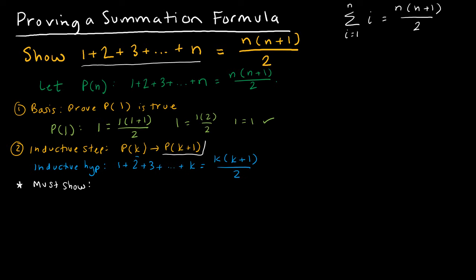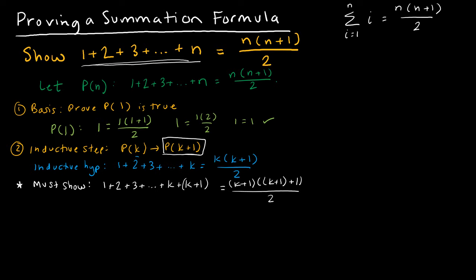Now I have to show p of k plus 1 is true — this is the step that not all instructors show, but for me this is a really important step because it gives me my roadmap. So I have to show: 1 plus 2 plus 3 all the way through k, plus k plus 1, is equal to k plus 1 times k plus 2 over 2. This is where I'm trying to get to, and that's why this step is important — it tells me where I'm trying to end up.